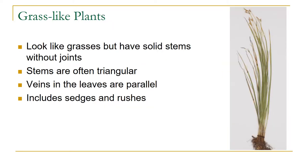Grass-like plants, as the name suggests, look like grasses but are a little different. Grasses have hollow stems, while grass-like plants have solid stems and no joints on the stems either. Many grass-like plants — sedges especially — have triangular stems. The veins are parallel to the margin, like grasses. The most common groups of grass-like plants are sedges and rushes.